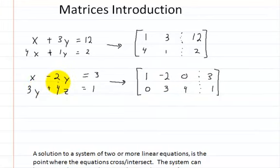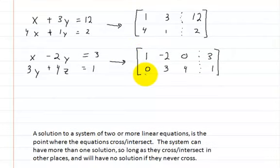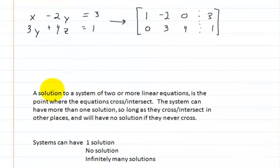The reason you're doing matrices is because it's often easier than the old method for solving simultaneous equations. A solution to a system of two or more linear equations is the point where the equations cross or intersect. The system can have one or more solutions if they cross in other places, and no solution if they never cross.